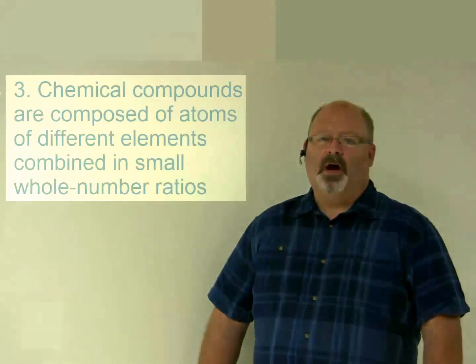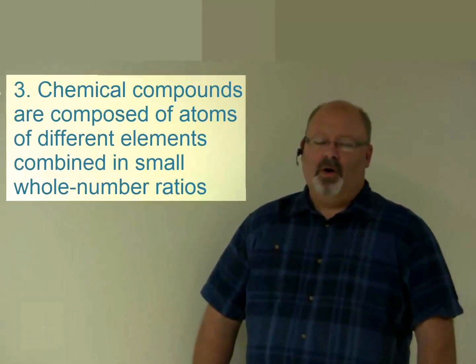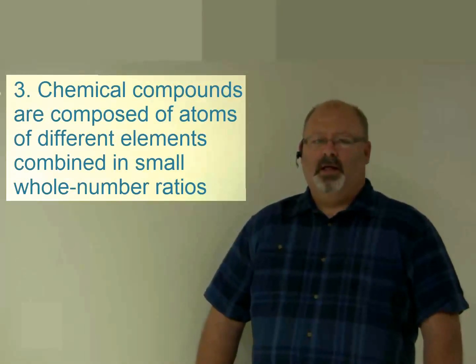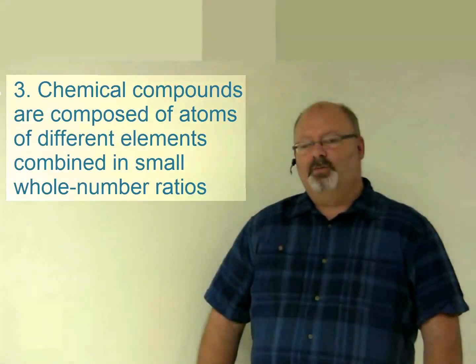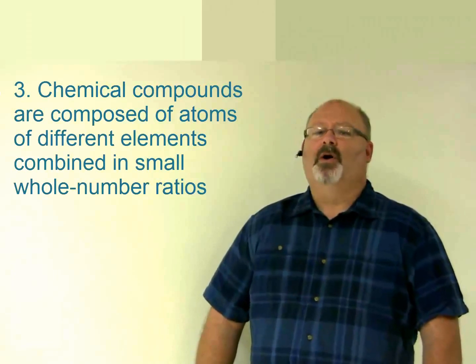Number three: Chemical compounds are composed of atoms of different elements combined in small, whole number ratios. This is the major success of the model. It follows from assertion one, atoms are indivisible, so the ratios must be small, whole numbers.